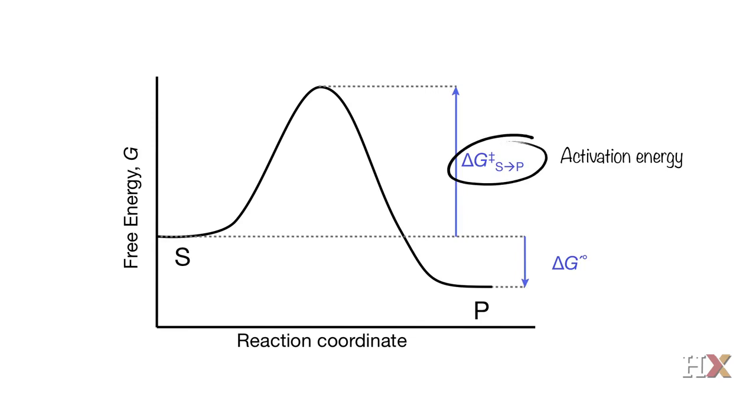This activation energy is needed because there are bonds that are rearranged. There are charges, transient charges that are formed on the enzyme. You have a distortion, a change of the position of chemical groups and so on.